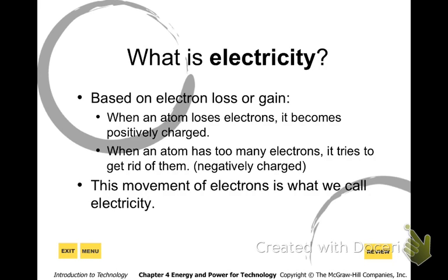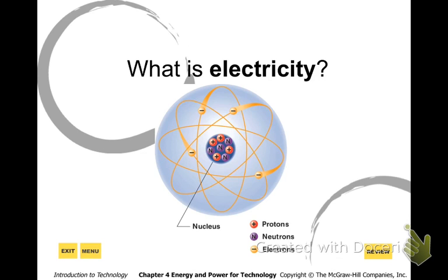So again it is the movement — when you excite the atoms or excite the electrons, that's what we call electricity. Here's a diagram: you have your electrons on the outer rings, and you have your protons and neutrons. Protons are positively charged, neutrons are neutral, and electrons are the negative charges on the outside. When we lose or gain those electrons is when we create electricity.